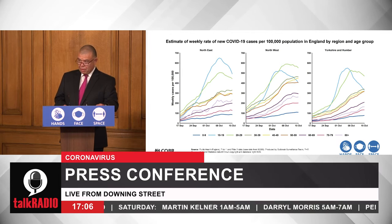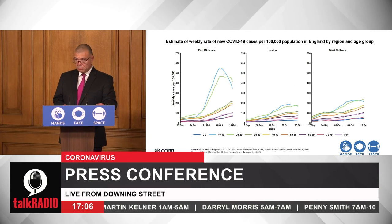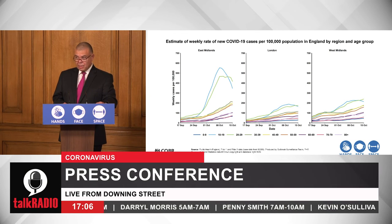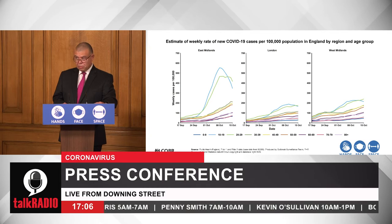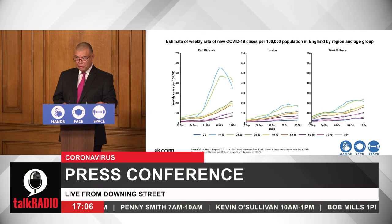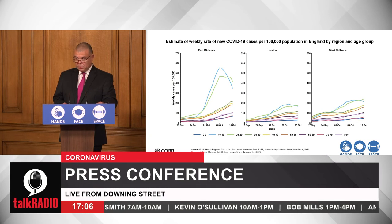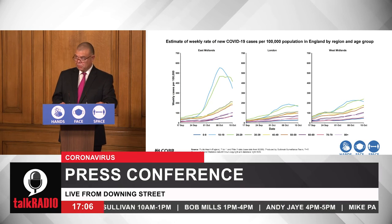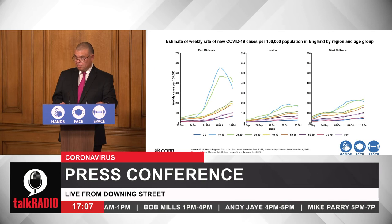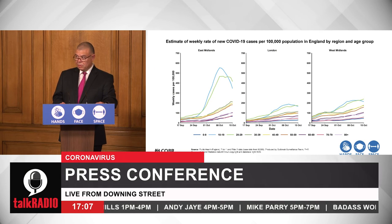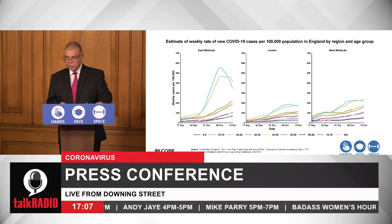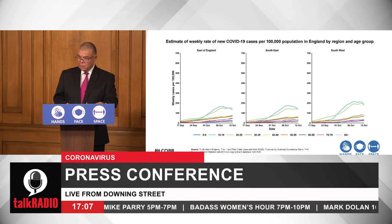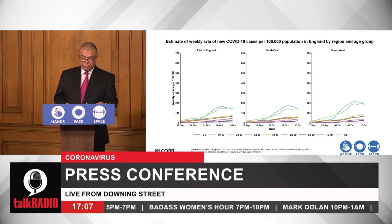These are the same graphs for the East Midlands, London and the West Midlands. You can again see, particularly in the East Midlands and related to Nottingham, that drop in the 10-to-19s and 20-to-29s, but the continuing increase in case rates in the other ages. The same is true of the East of England, South East and South West, but at much, much lower overall levels of disease than we are currently seeing in the North of England.